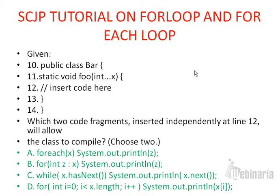We have 4 options: a, b, c, d. We need to insert these 4 options at line 12. The question is: which 2 code fragments inserted independently at line 12 will allow the class to compile? So from the 4 options, 2 options will allow the code to compile. We need to find out which 2 will allow it to compile, which 2 are not, and what the reasons are.